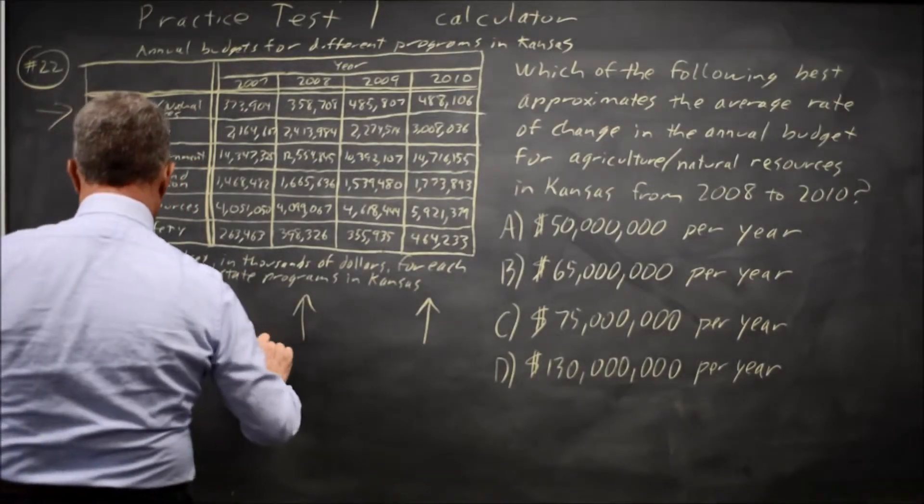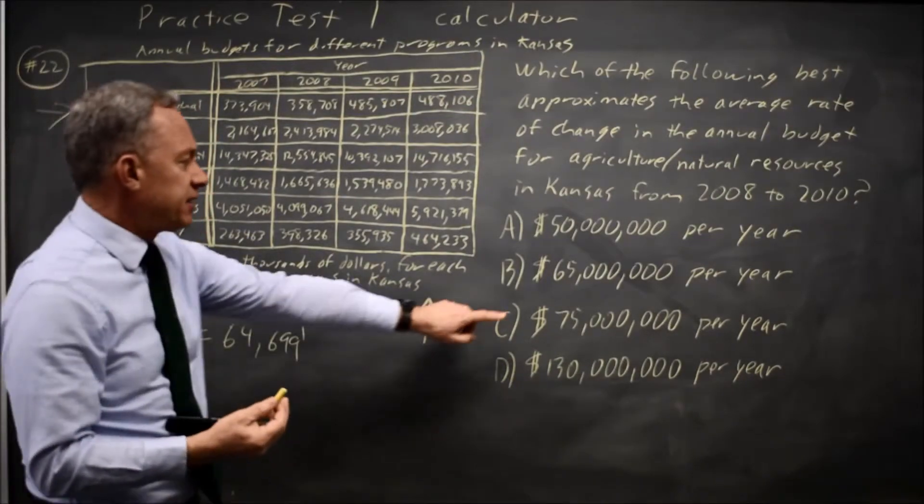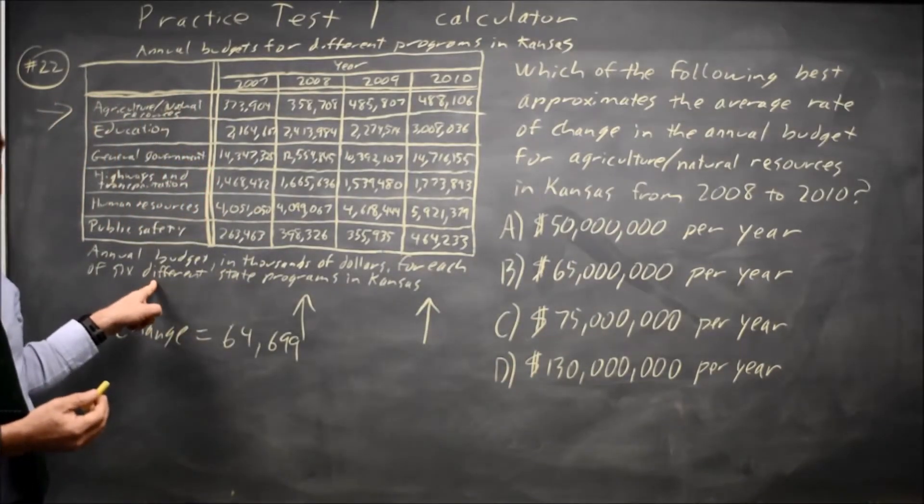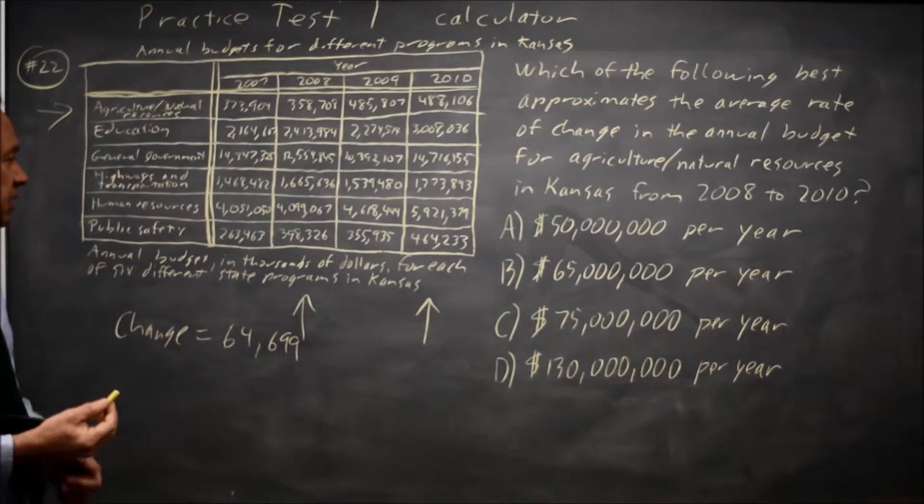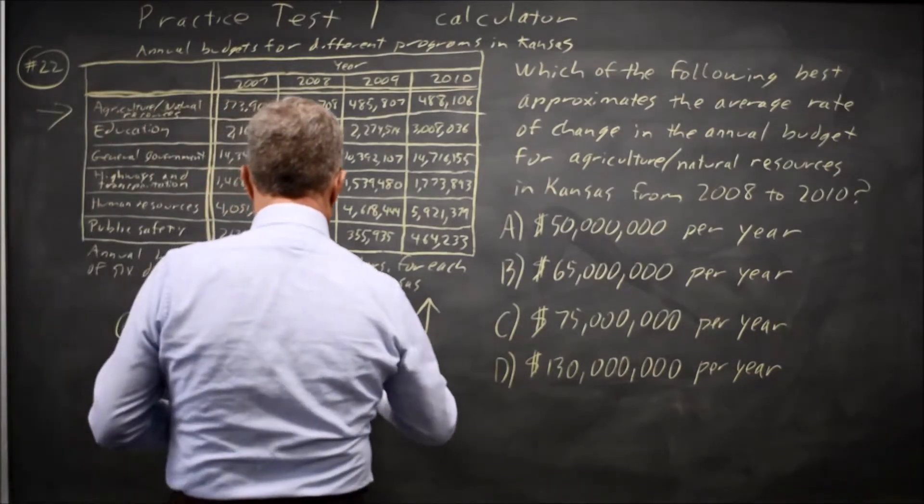is 64,699 which is about 65,000, but our choices are in millions. If you read the footnote under the table it says budget in thousands of dollars, so this is in fact 65 million approximately.